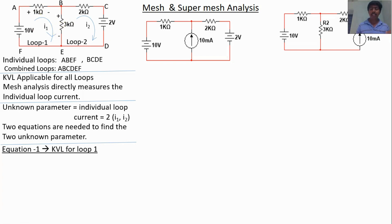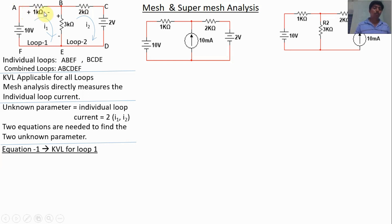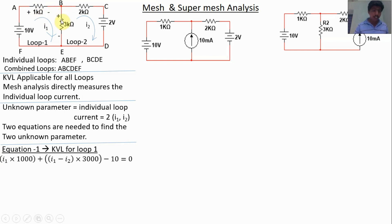The algebraic sum means: if current enters from plus to minus, that voltage is positive; if current enters from minus to plus, that voltage is negative. Applying KVL for loop 1 — the current flows from point A through the resistor from plus to minus, so positive voltage. By Ohm's law, voltage equals I times R. This current is I1 and the resistance is 1kΩ.